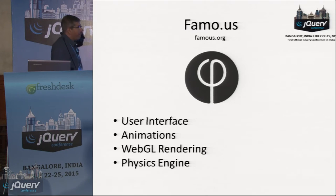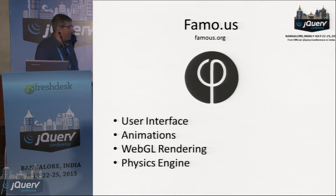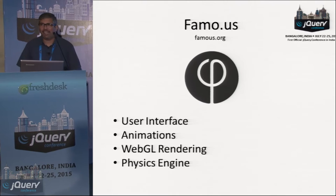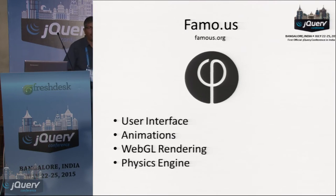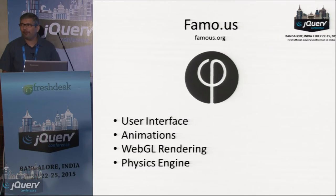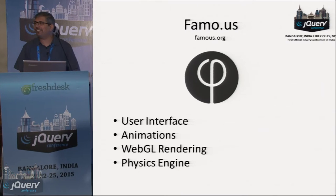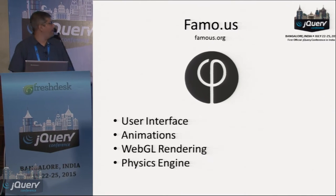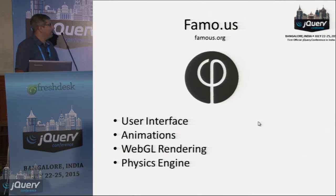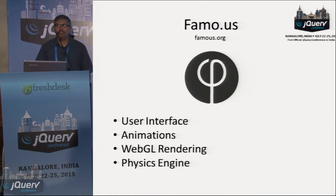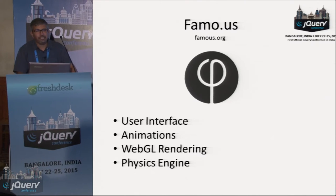Famous is a user interface library. It is also an animation library, a WebGL rendering library, and it has an inbuilt physics engine. Now you would say there are so many user interface libraries already available - jQuery itself has an animation library, you also have WebGL with Three.js. So what is the thing that Famous does which the others can't do? How does Famous really differentiate itself?